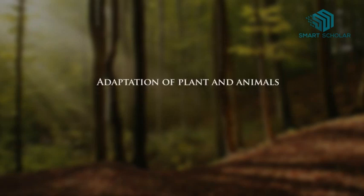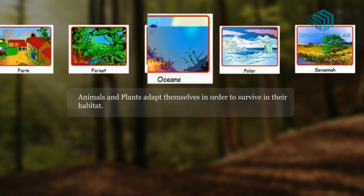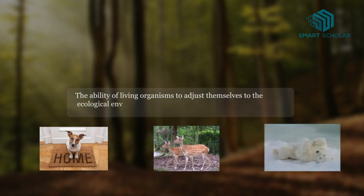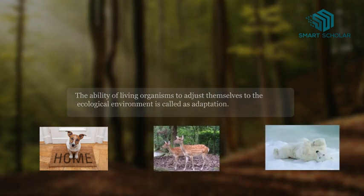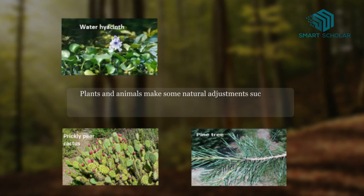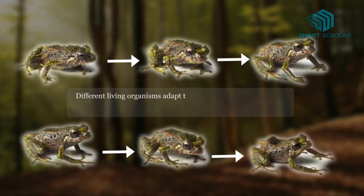Adaptation of Plants and Animals. Animals and plants adapt themselves in order to survive in their habitat. The ability of living organisms to adjust themselves to the ecological environment is called adaptation. Plants and animals make some natural adjustments such as changes in their body or behavior or changes in location to fit themselves in their environment. Different living organisms adapt themselves to their habitats in different ways.